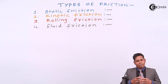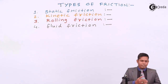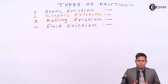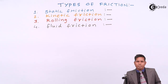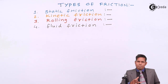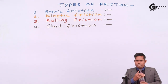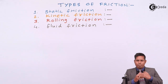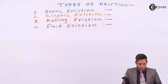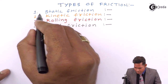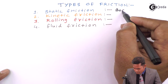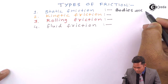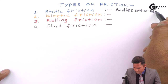We will discuss that in detail. As long as there exists an applied force and the object is not moving, during that condition — as long as the object is in a static condition — the friction that acts is known as static friction. Static friction acts between two bodies whenever there is a tendency of relative motion, but relative motion has not actually occurred.